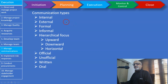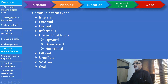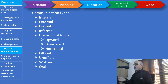Communication types: communication can be internal — internal to the project — or external, such as when a project manager talks to the press or other statutory bodies. It can be formal or informal. There is also a hierarchical focus: upward communication, where a team member communicates to the project manager, or a project manager communicates to the program manager, are examples of upward communication.